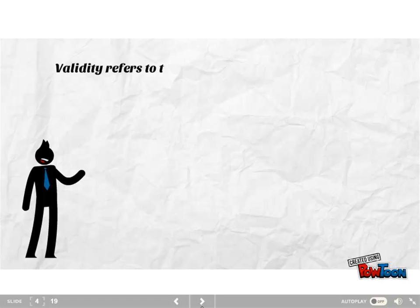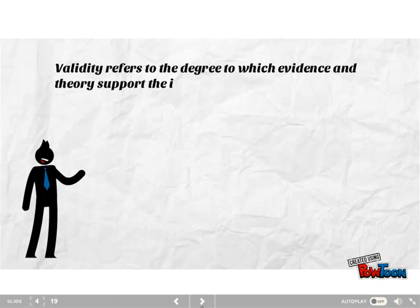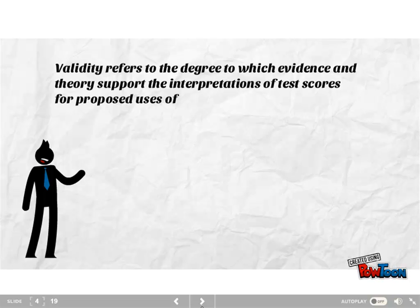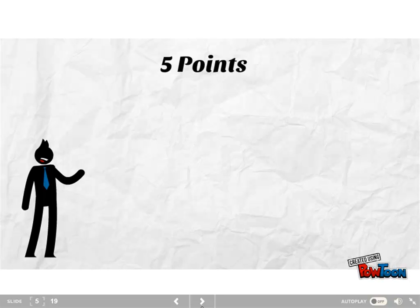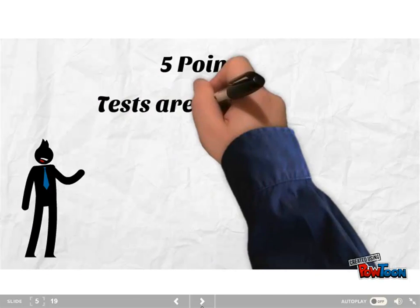Validity refers to the degree to which evidence and theory support interpretations of scores for each proposed use of a test. So what does this entail? Well, there are five basic points.